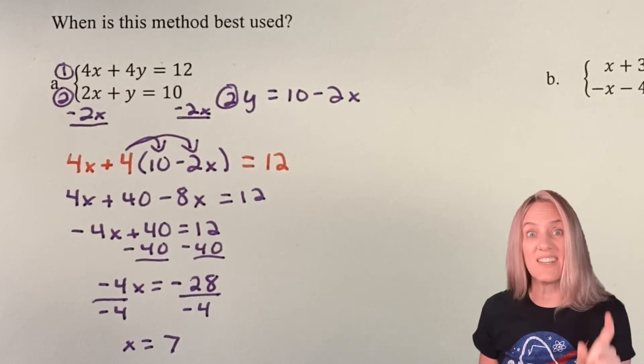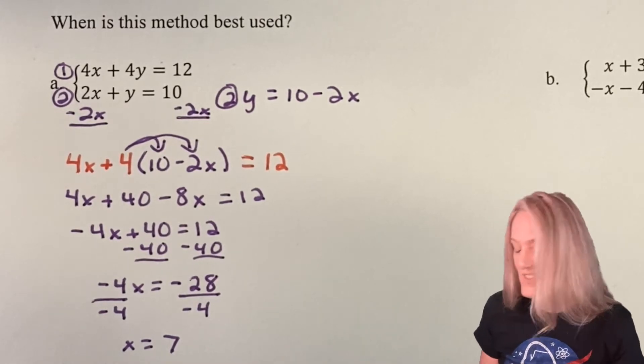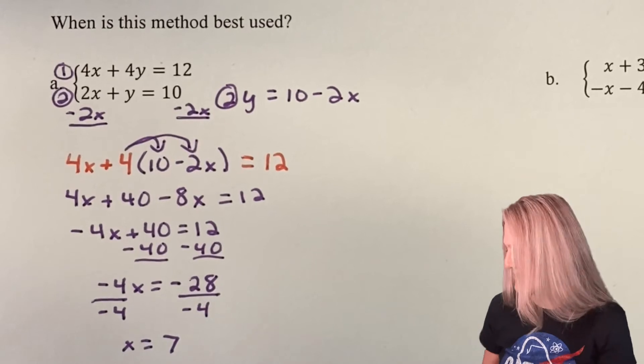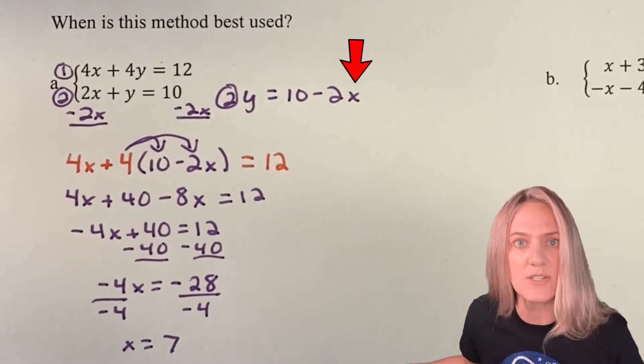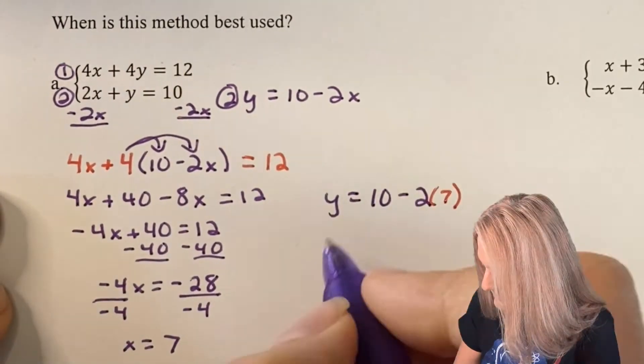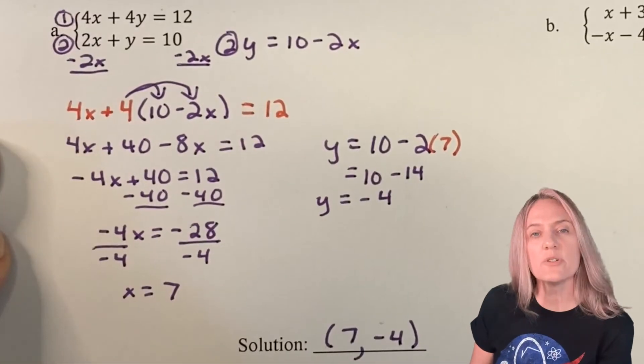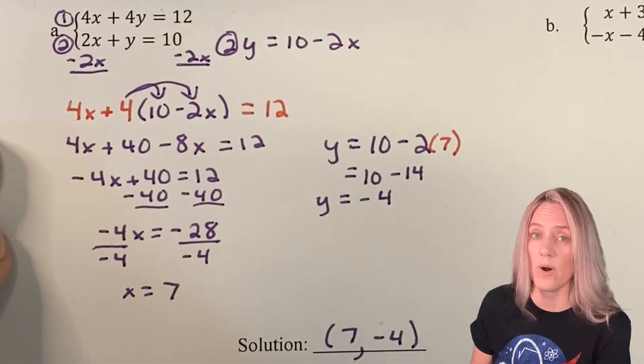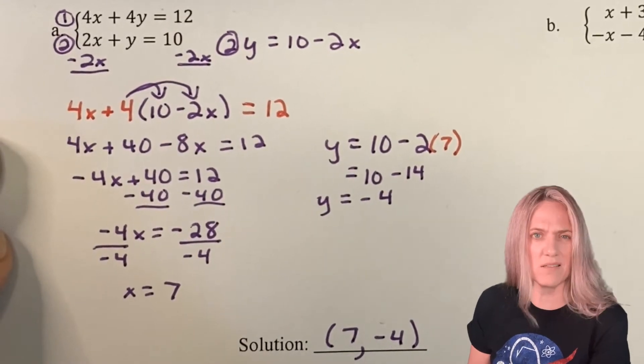We have to find that y-coordinate. The nice thing about substitution is we already have an equation that says y = 10 - 2x. So easy to substitute 7 in for x and get y. The solution is (7, -4). I wrote it as a point.